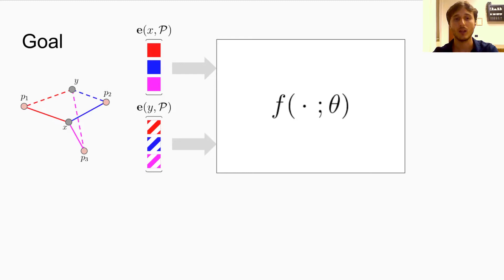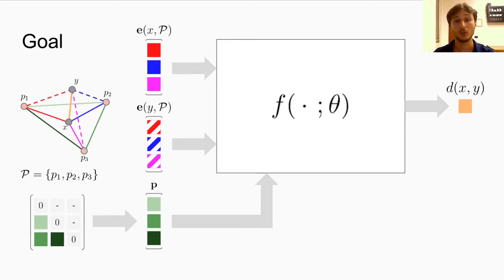We optimize the parameters of the model in order to predict the distance between X and Y. The model would also need to know how pivots are placed relative to one another in the metric space, so we also give as input to the model the linearized distance matrix of the pivots.